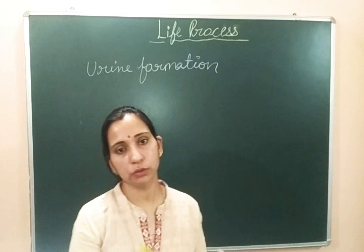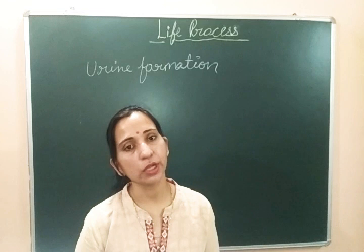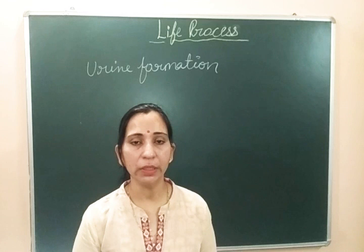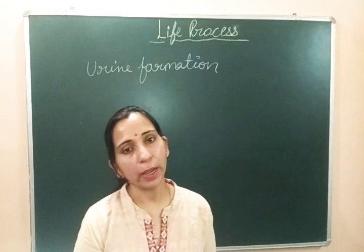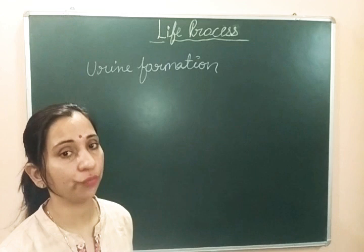So how does blood do this? Blood takes harmful substances like urea and other metabolic waste and carries them to the kidney. The kidney then performs its required functions to eliminate the waste from the blood, and this process of elimination happens through the formation of urine. So today we are discussing how urine formation takes place.